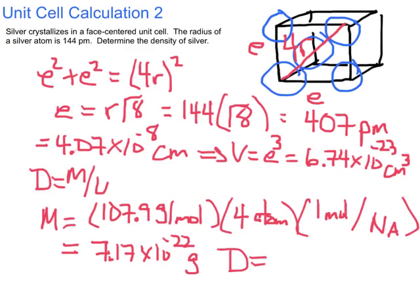That number doesn't make any sense. Let me do that one more time. 7.17 exponent 22 divided by 6.74 exponent 23. There we go. I get 10.6 grams per centimeter cubed.